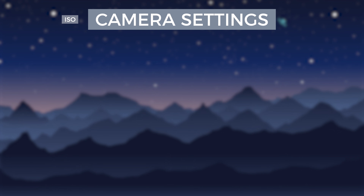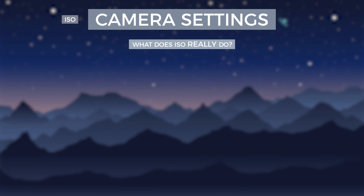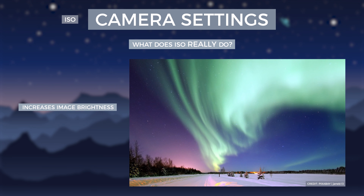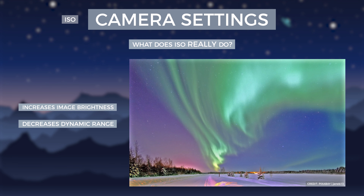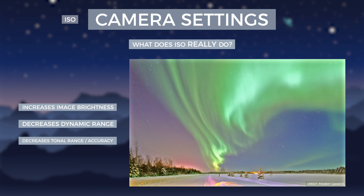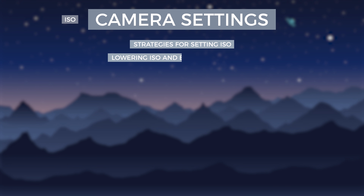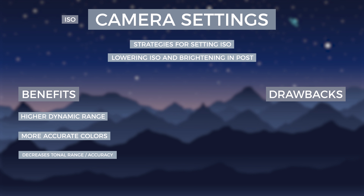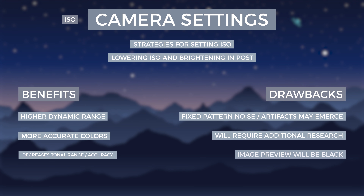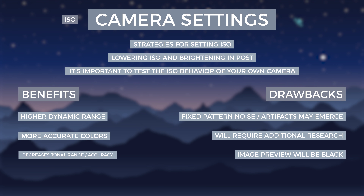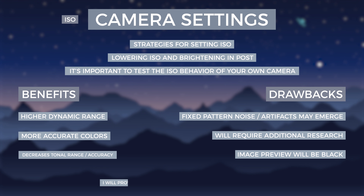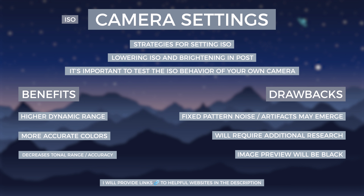So what does ISO really do? Increasing ISO does three things: it increases the brightness, decreases the dynamic range, and decreases the tonal range of an image. Should you lower your ISO all the way and brighten the image in post-production? On some cameras this strategy is effective, but on others, lowering ISO and brightening in post can reveal unappealing fixed pattern noise and strange artifacts. I suggest you become familiar with the ISO behavior of your camera before trying these methods. If you are still confused, I will provide links to helpful websites in the description.